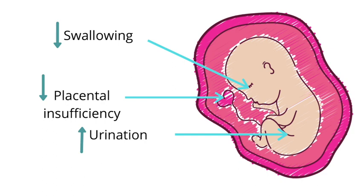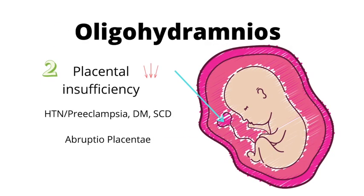Now let's look at oligohydramnios. Using the amniotic fluid index, oligohydramnios is defined as less than 5 centimeters of amniotic fluid. A contributor is placental insufficiency, which occurs in any state that affects the integrity of the placenta — including hypertension or preeclampsia, diabetes mellitus, and sickle cell disease in the mother.